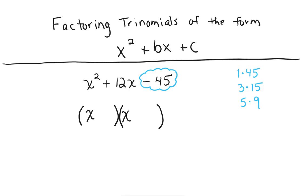But keep in mind, you're looking for the pair that would add up to, or when you combine them, would give you a positive 12. Now remember, that 45 is a negative, so one of these has to be positive, and the other one has to be negative. So you're looking for the pair that subtracts to give you the 12, and that's going to be the 3 and the 15.